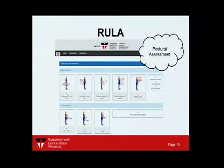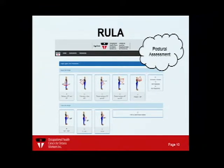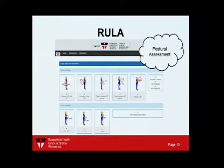The Rapid Upper Limb Assessment is a well-tested, well-developed tool that first came out around 1993. RULA gives you a quantification of whether we need to look at this job any further, whether it's okay for now, or whether we need to monitor it for future changes in the workplace.